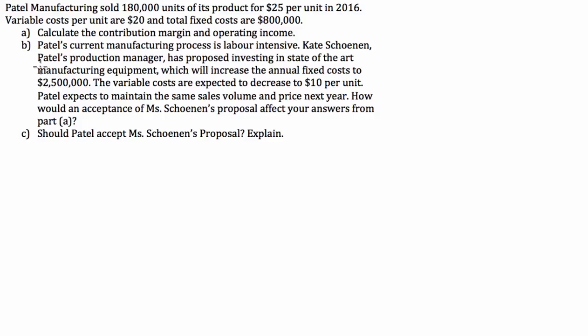G'day guys, we've got a cost accounting question today. We've been given a company, Patel Manufacturing, that sells 180,000 units of its product for $25 per unit in 2016. Variable cost per unit are $20 and total fixed costs are $800,000. Calculate the contribution margin and operating income is the first part of our question.